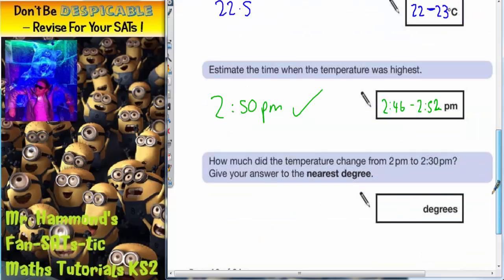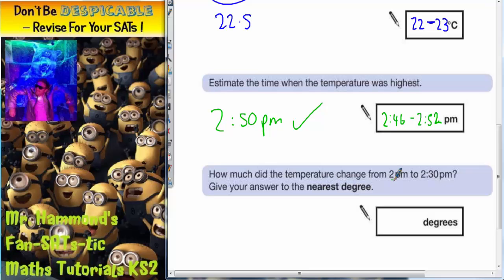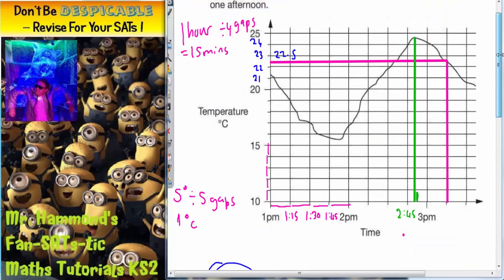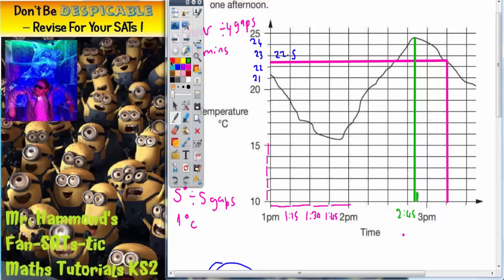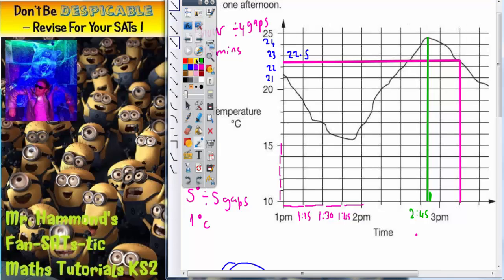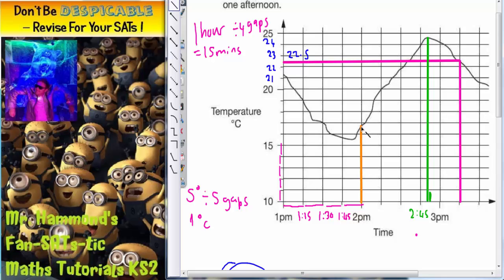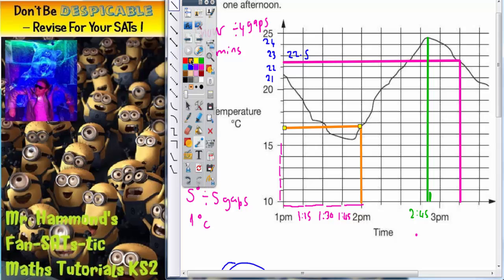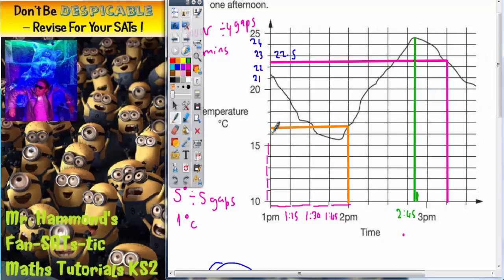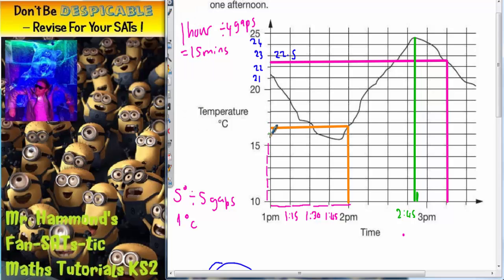The final question: How much did the temperature change from 2 p.m. to 2:30 p.m.? Well, we're looking for 2 p.m. and 2:30 p.m. So 2 p.m. is here. So go up to the temperature, and then from there, draw another line across. So that was the temperature at 2 p.m. And this is 15, 16, 17. So this is going to be 16.5 degrees.